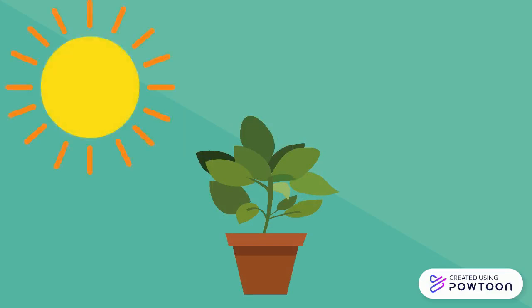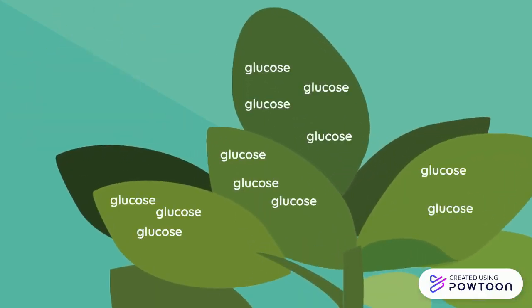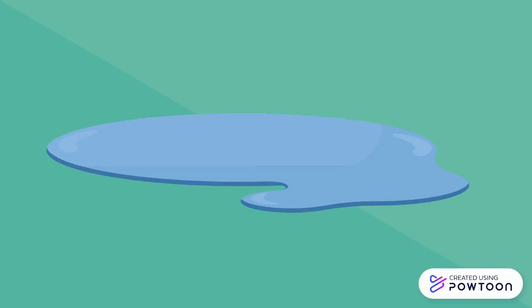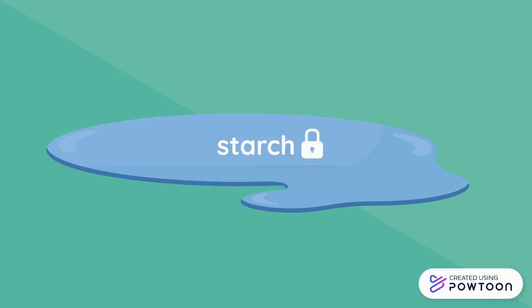Plants produce glucose during photosynthesis and use it for energy so they can grow. Any excess glucose produced is stored in their leaves as starch so that they can save it for later. Plants can't store energy as glucose because glucose is water-soluble, which makes it really hard to keep in one place. On the other hand, starch does not dissolve in water, which means it stays in one place until it is needed again.